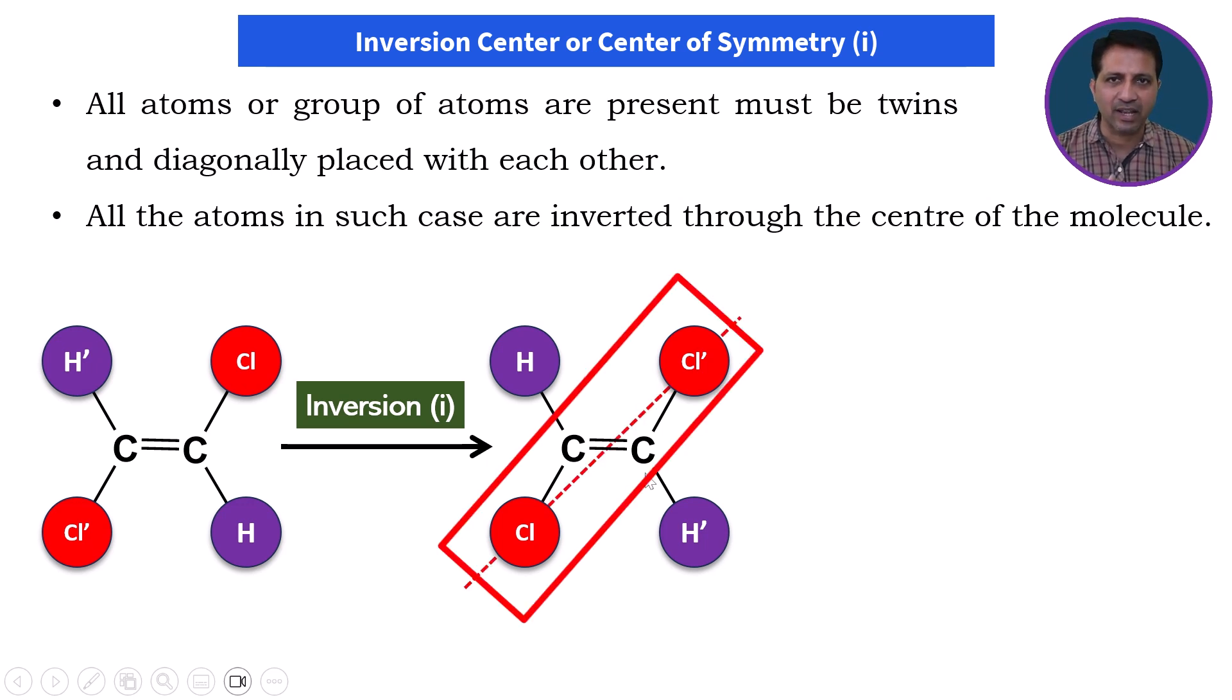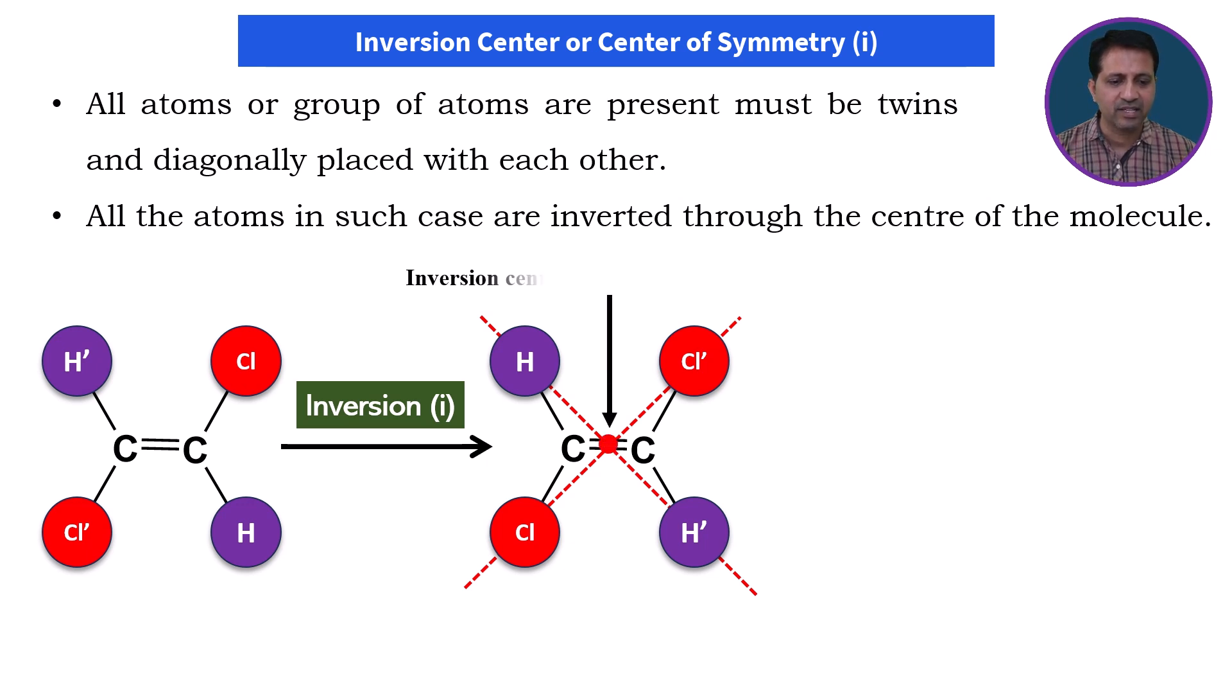If we pass a line from similar atoms that undergo the inversion operation, these two lines meet at one point and that point is called as inversion center or center of symmetry.